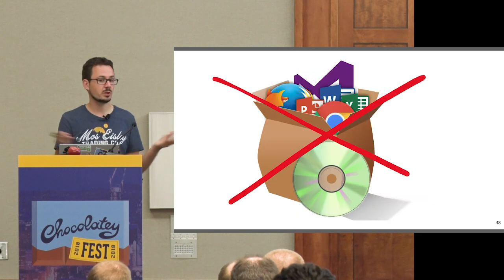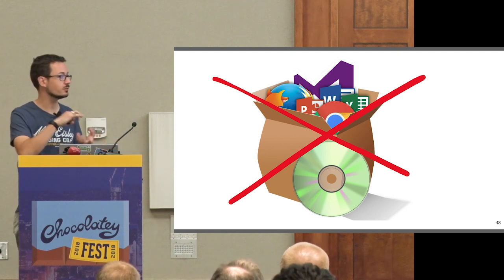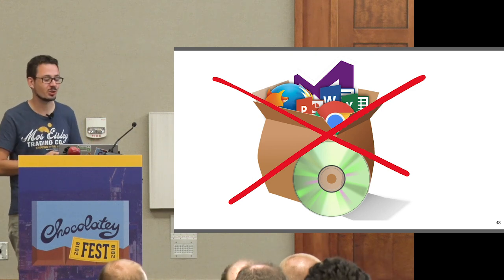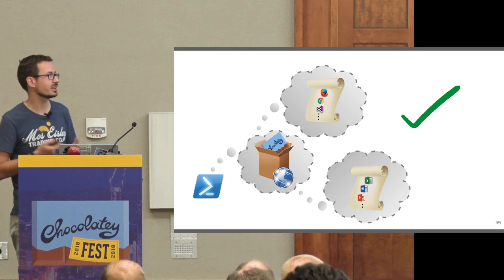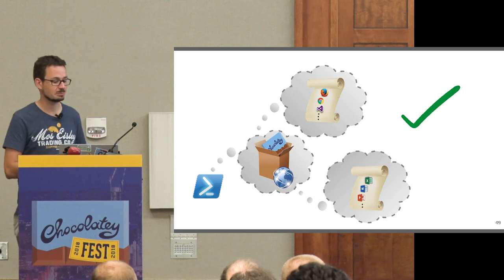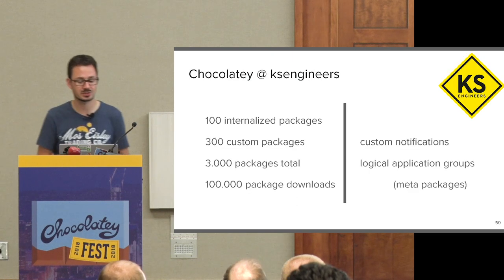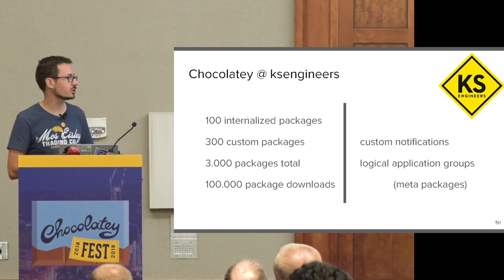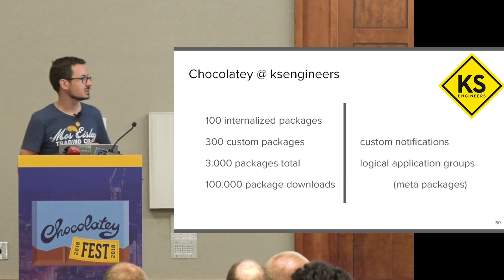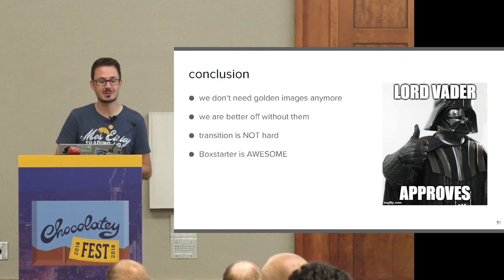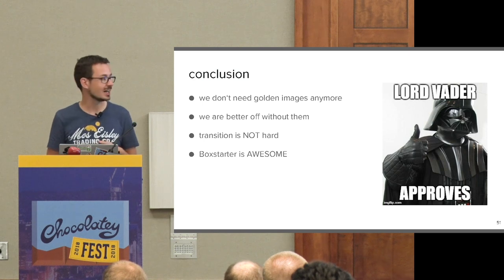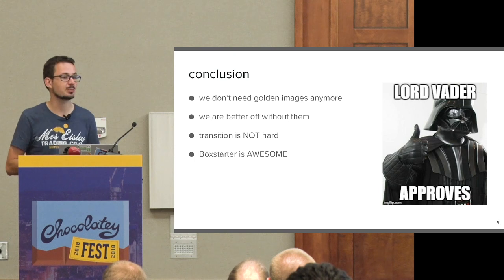So where we are now: we basically do not need our golden or static golden images anymore. We try to have very small images and go with code or Chocolatey packages from there on. That's what I've been doing in the last one and a half to two years at Case Engineers. Currently we've got approximately 100 internalized packages, I've created about 300 custom packages, which sum up to a total of approximately 3,000 packages, and we've got over 100,000 package downloads.